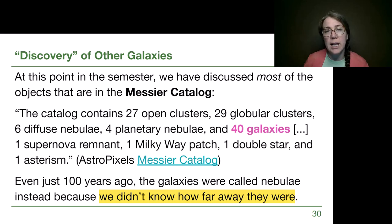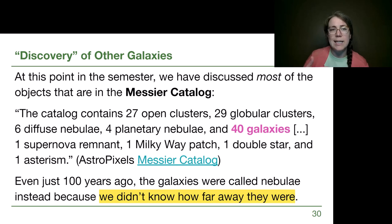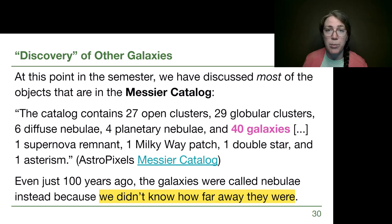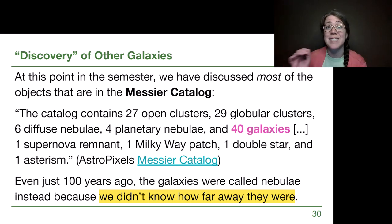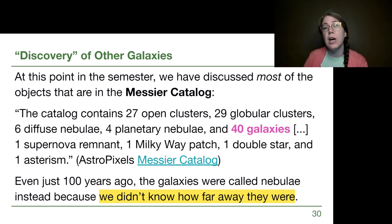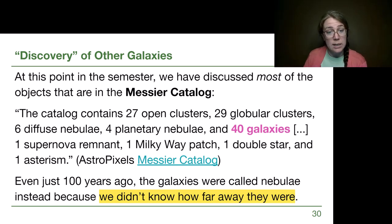That 40 galaxies is highlighted because we have not yet talked about the idea that other galaxies had to be discovered. Messier put them in his catalog — they were seen but not understood. In the 1700s those were called spiral nebulae, and they continued to be called that throughout the 1700s, 1800s, and into the early 1900s. Even just a hundred years ago, those galaxies were not known to be what we now understand as galaxies.